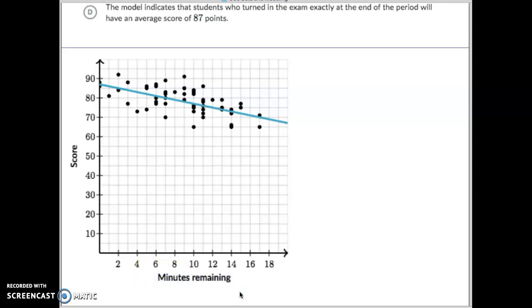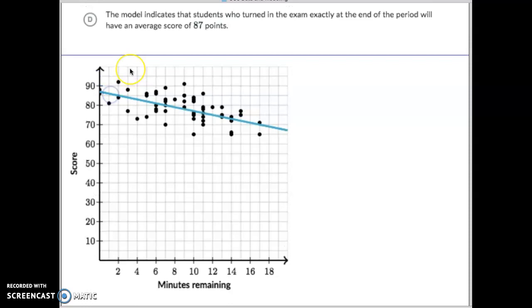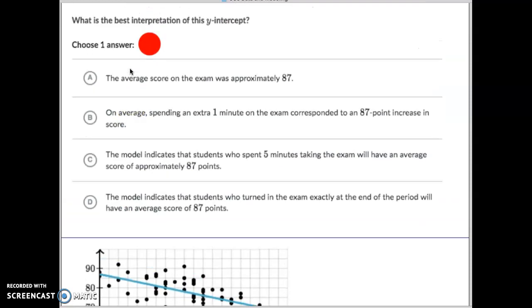So when there is zero minutes remaining in their test. So someone took an exam, and let's say it was like an ACT test, and they're given so much time. Well, students that used up the entire time on that and had no minutes remaining would have scored an average score of 87. So we've got to find out which one represents that.